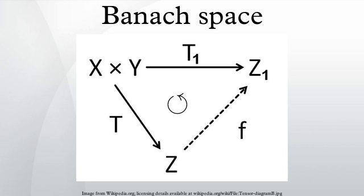If X is infinite-dimensional, there exist linear maps which are not continuous. The space of all linear maps from X to the underlying field K also induces a topology on X which is finer than the weak topology, and much less used in functional analysis. On a dual space X*, there is a topology weaker than the weak topology of X*, called the weak* topology. It is the coarsest topology on X* for which all evaluation maps x* ↦ x*(x) are continuous.